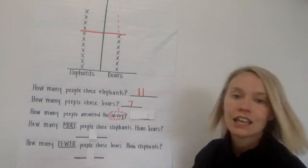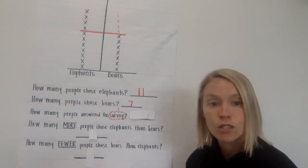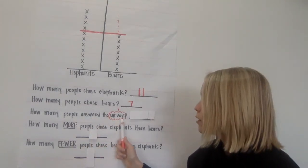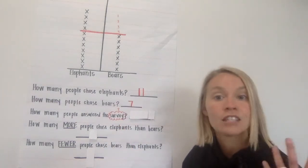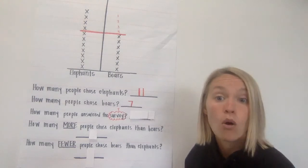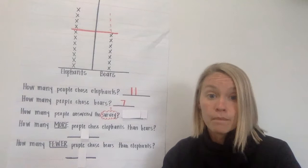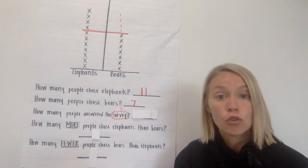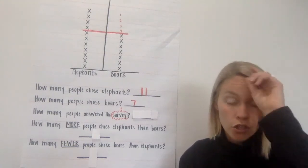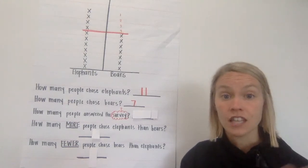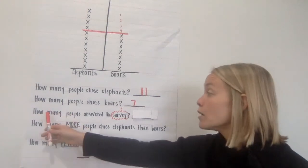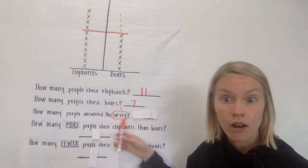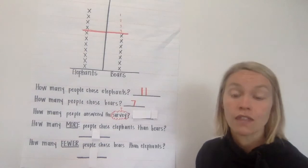Let's move on to the next question: how many people answered the survey? I drew a little bubble around the word 'survey.' A survey is a question that someone wants people to answer. In this survey, Sam asked his friends: do you like elephants or bears better? So the survey was to find out which one his friends liked, and we want to know how many people answered that question.